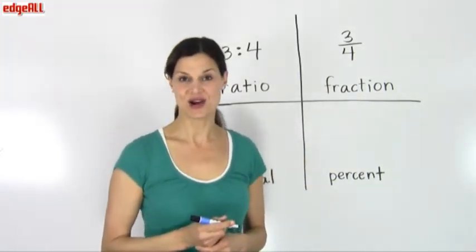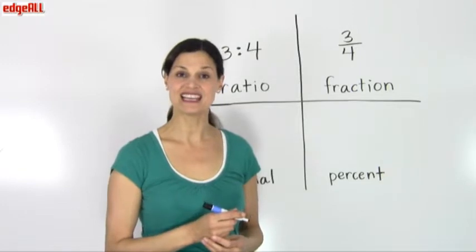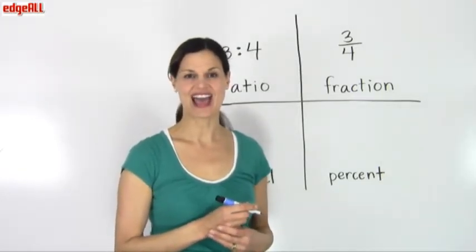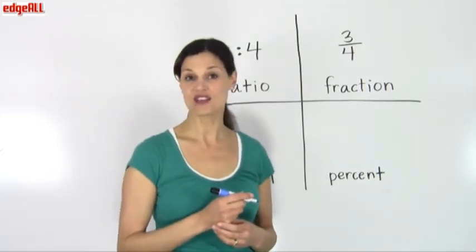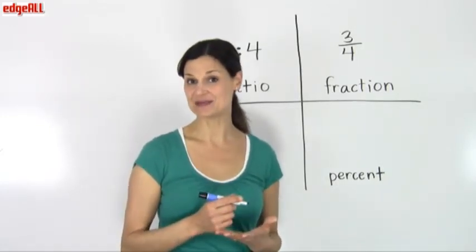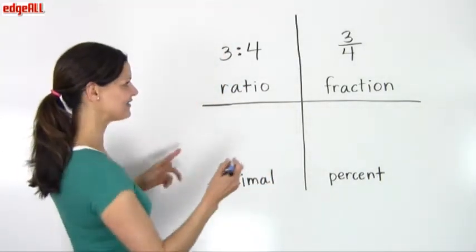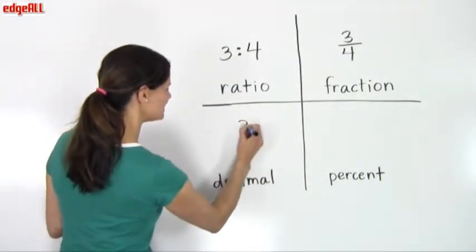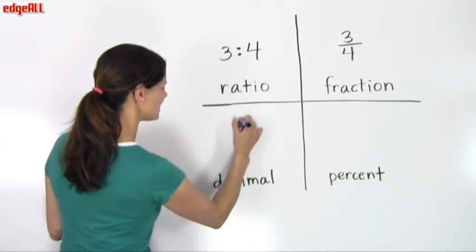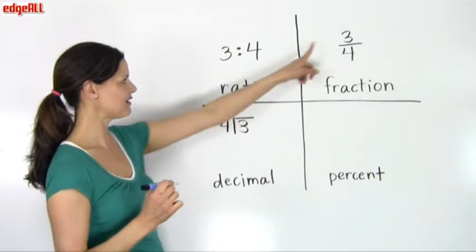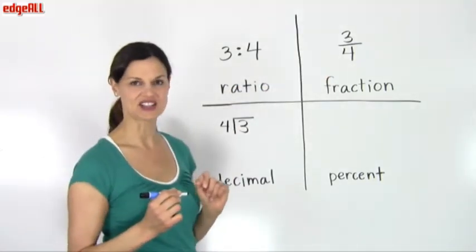You also know that a fraction can be written as a decimal by dividing the numerator by the denominator. So 3 fourths can be written as the decimal 0.75 if we do 3 divided by 4.